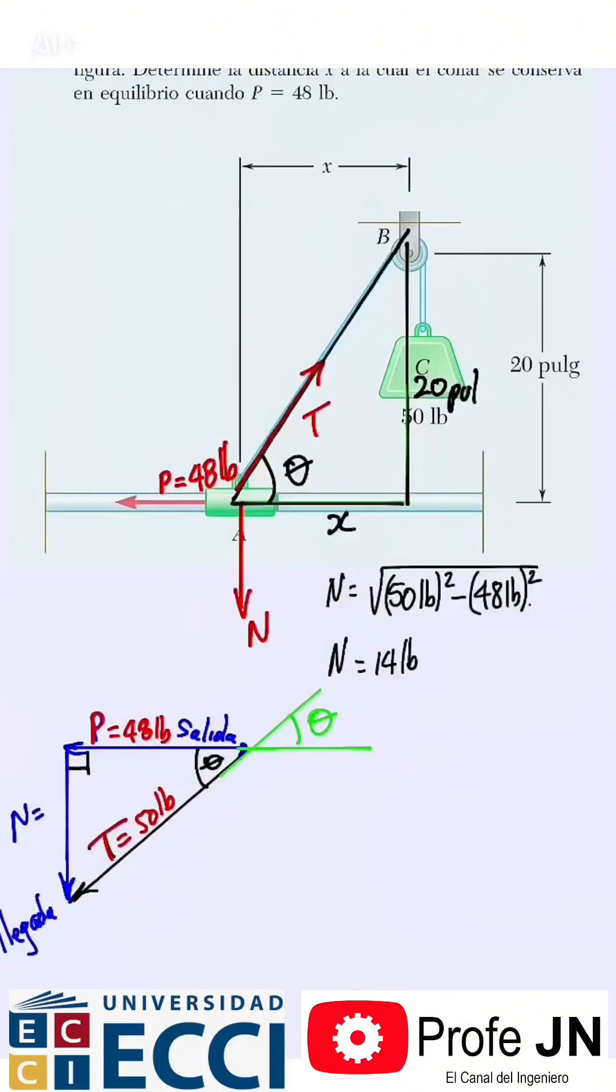And in this triangle, we say tangent of theta will be the opposite side N, but N gave us 14, over the adjacent side 48. There it is: 14 over 48. And in the triangle of length, tangent of theta equals 20 over X.